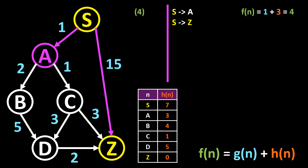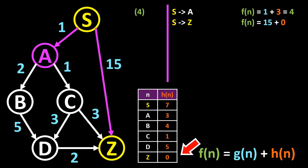Now we calculate F of N for the path from S to Z. We add the costs of the path, which is 15, and add the estimated costs from Z to the destination, which we can see in the table here. Logically this is 0, as Z is already the destination node. The result is 15, which we also note here.